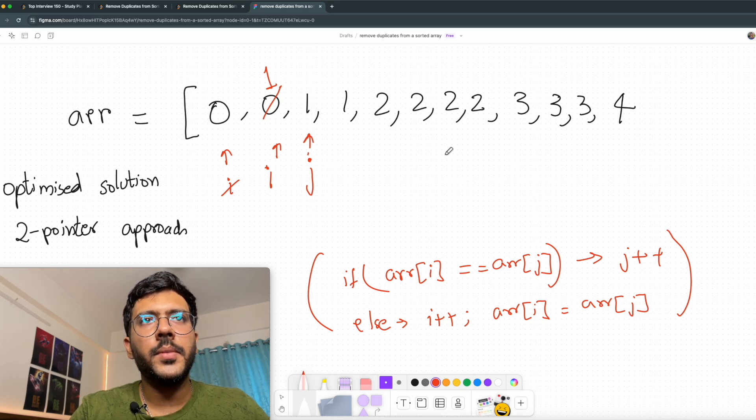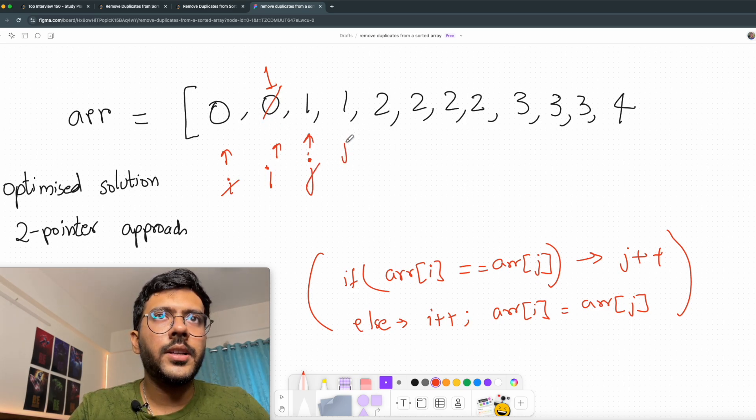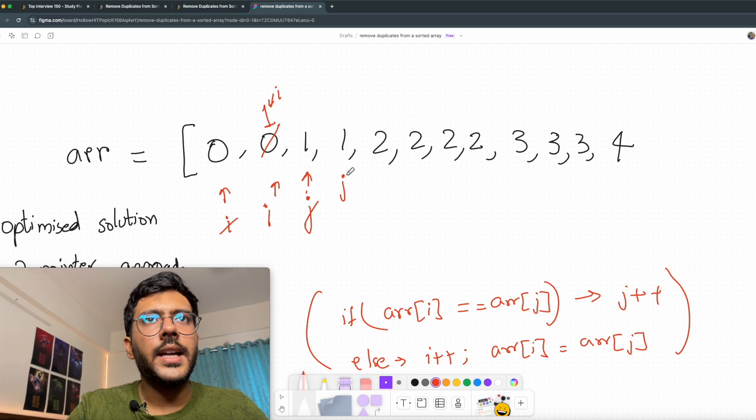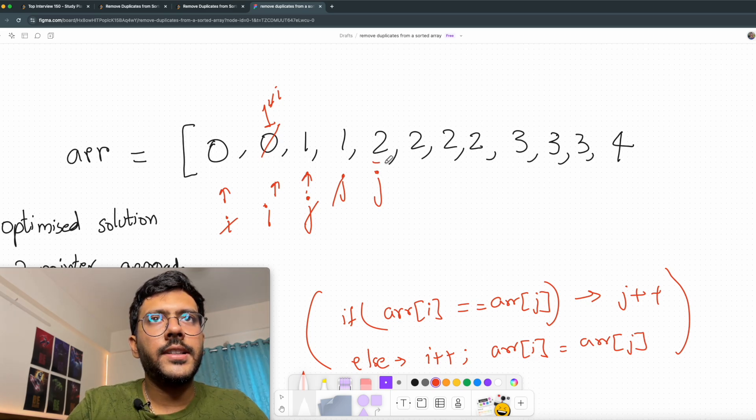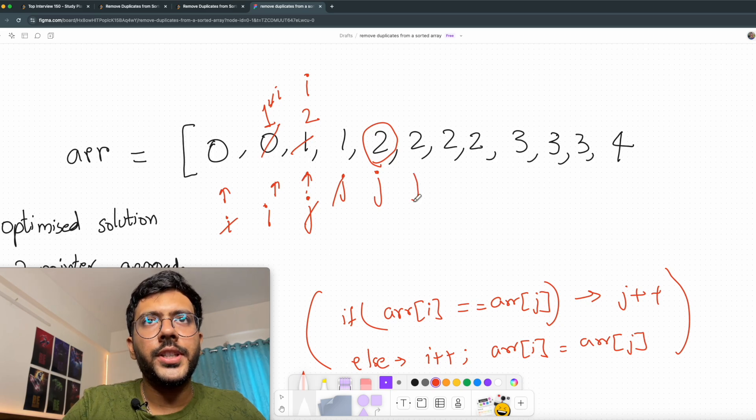So next, I increment j since i and j both are same. So I will increment my j and I see that i is pointing to this position. I see that j and i both are same again. So I remove j from here and point it here. Now I see that j is 2 and i is 1. So I increment my i and I store this 2 in this position.